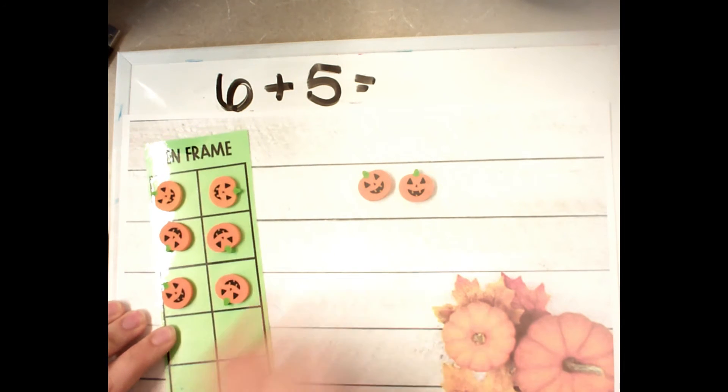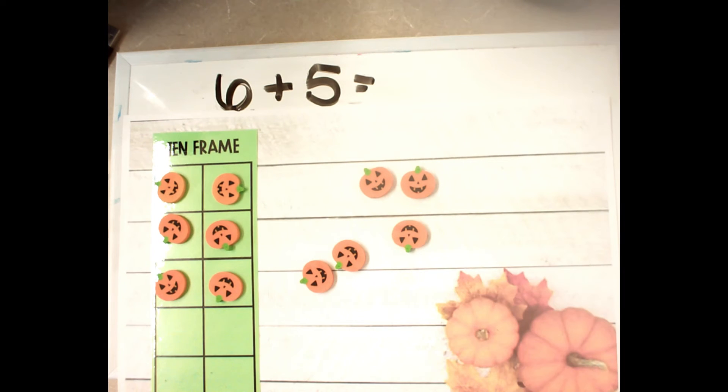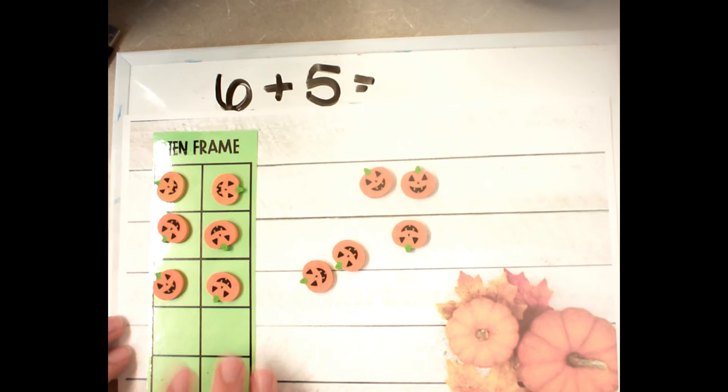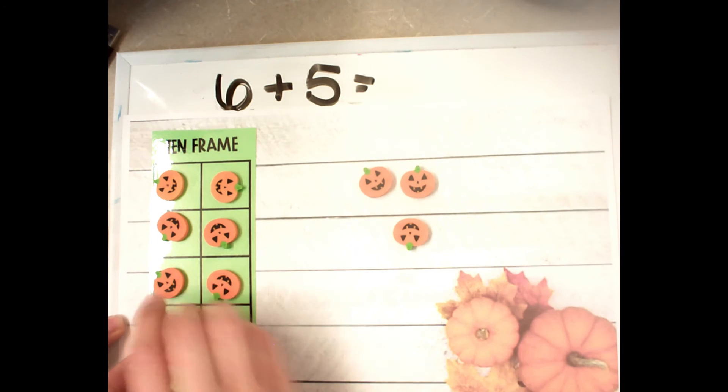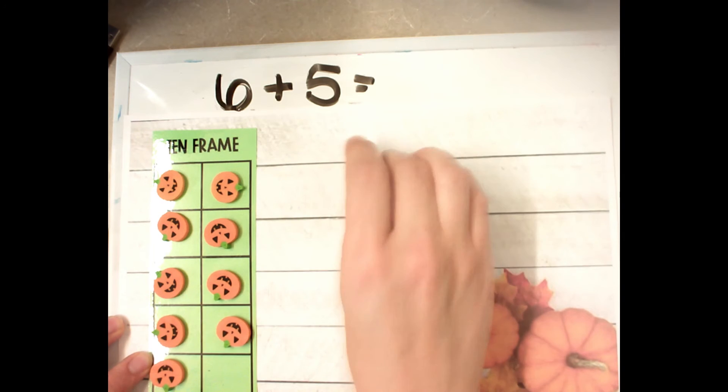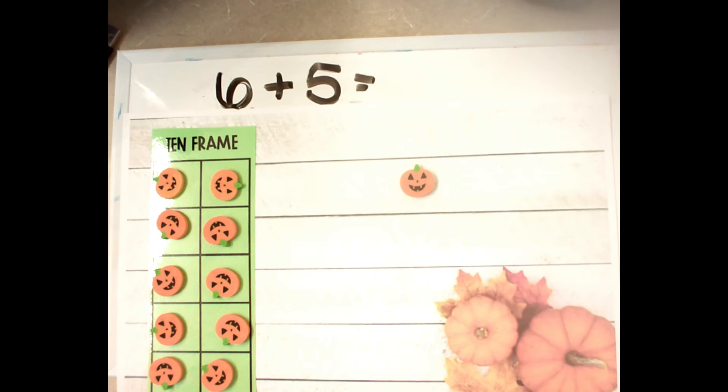So I've got 6 in my tens frame there and now I have 5 over here. So I know if I put 4 more in here, I'm just going to take them from my 5: 1, 2, 3, 4. I have a full 10 now. So that's 10 and one more is 11. So my answer would be 11.